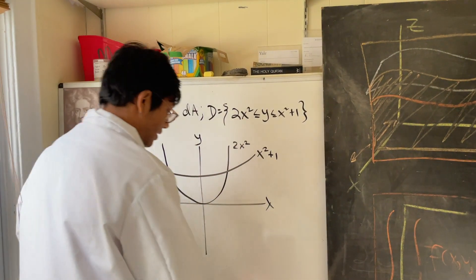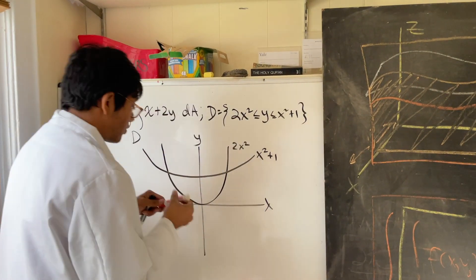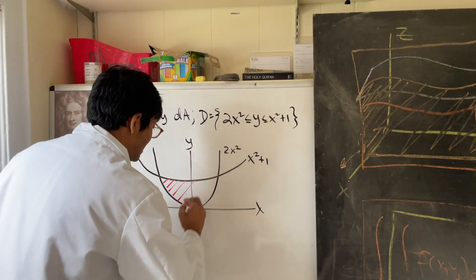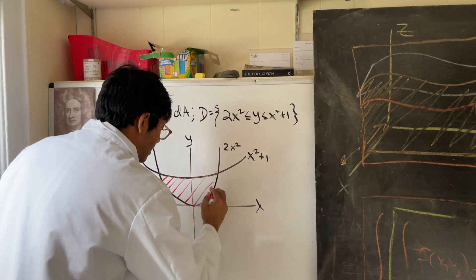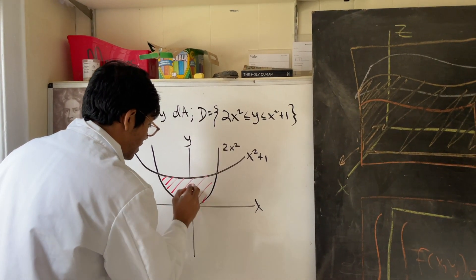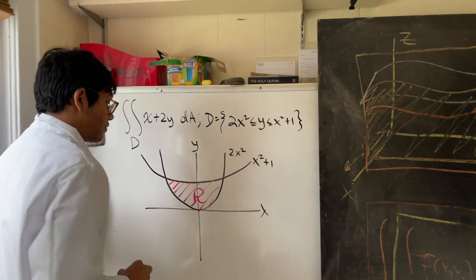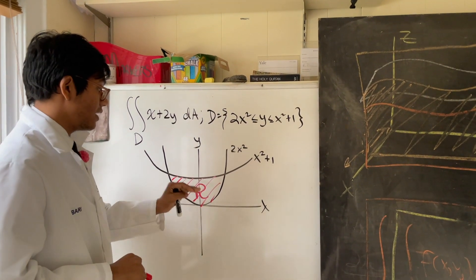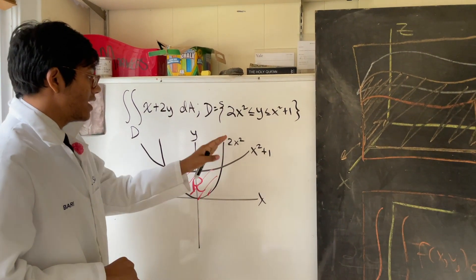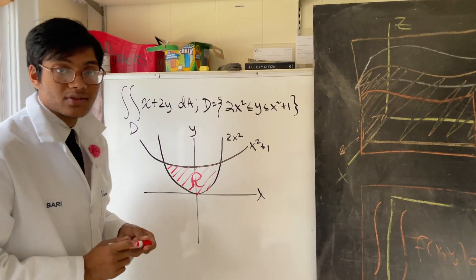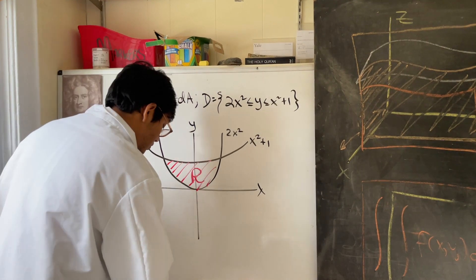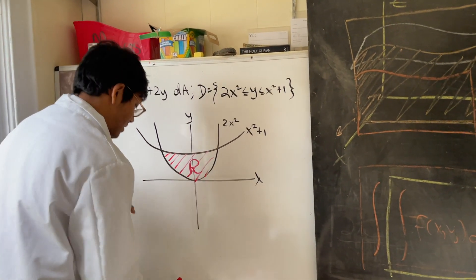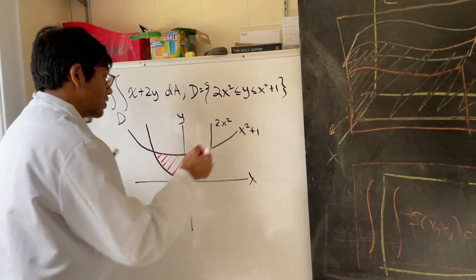So the region that we're working over is this region right here — D, the area between 2x squared and x squared plus 1. Now the first thing you want to do is find the x-coordinates of the intersections: the x-coordinate of the intersection on the left and the x-coordinate of the intersection on the right.